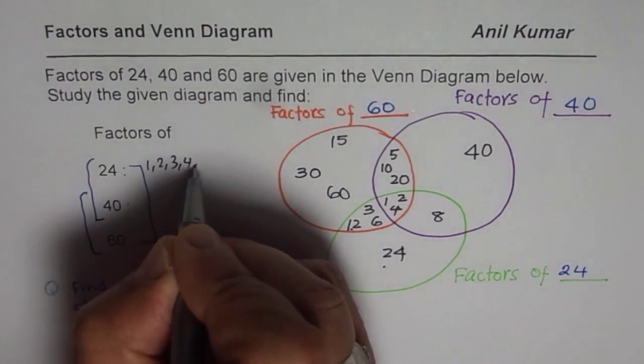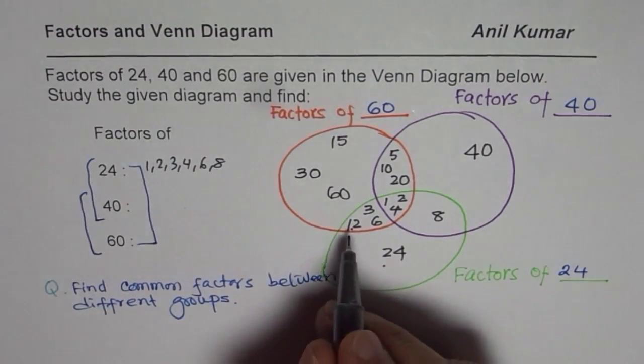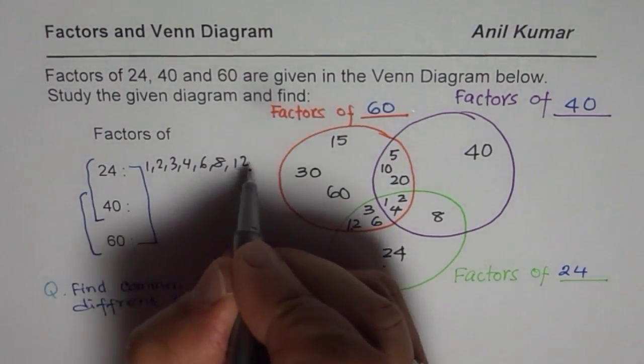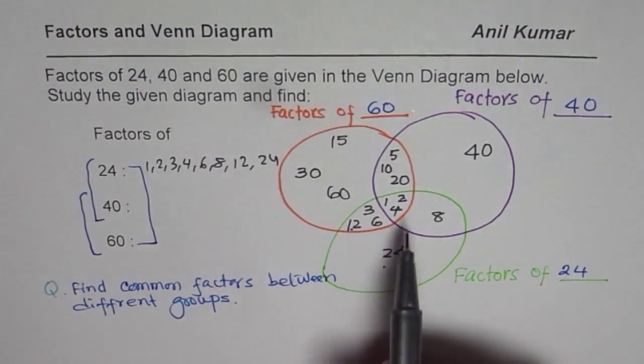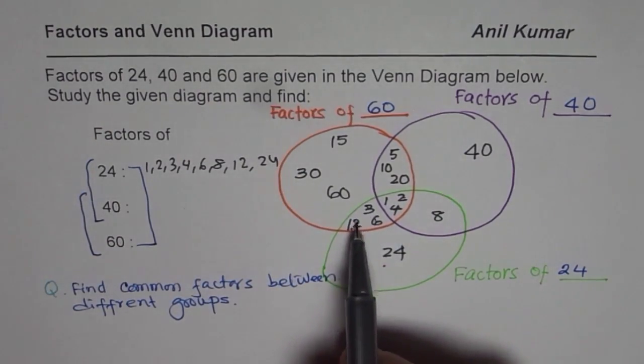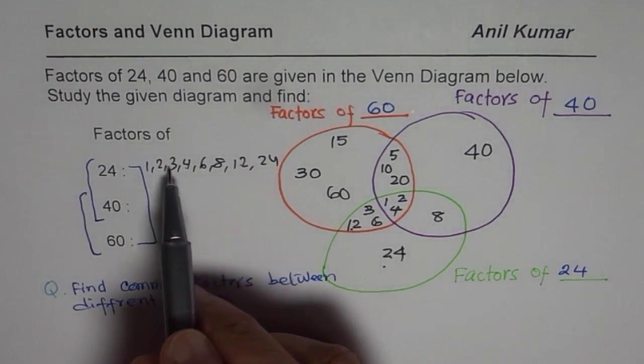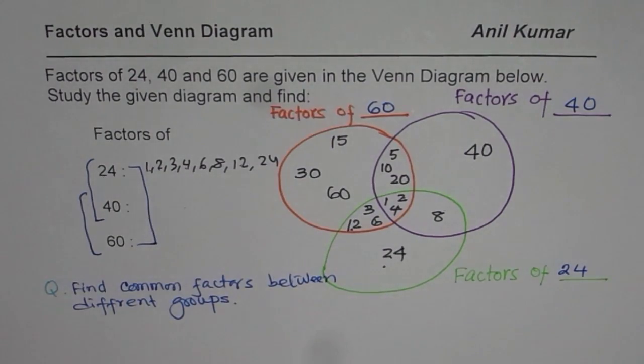1, 2, 3, 4, 6, 8, 12, and 24. Count. 1, 2, 3, 4, 5, 6, 7, 8. So, we covered all of them.